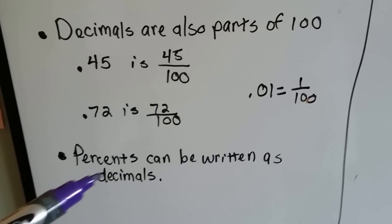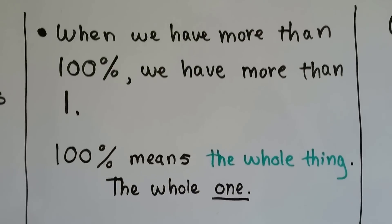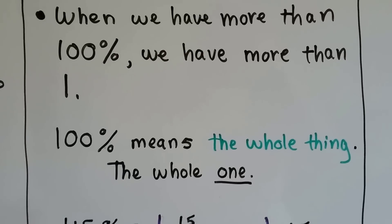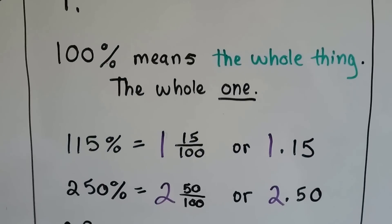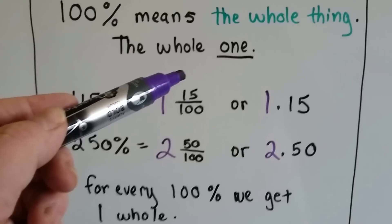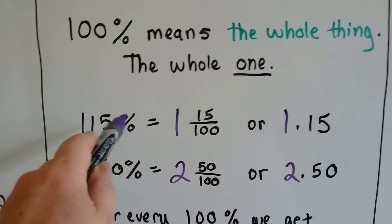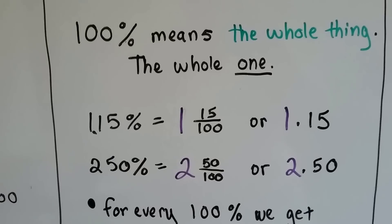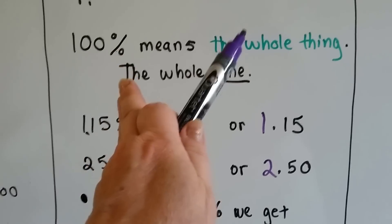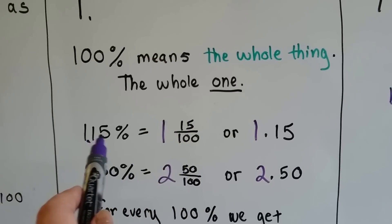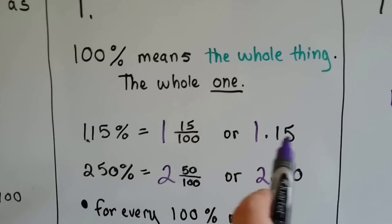Percents can be written as decimals also. When we have more than one hundred percent, we have more than one. If I ate one hundred percent of the pizza, I ate the whole pizza. One hundred percent means the whole thing — the whole one. One hundred and fifteen percent means one and fifteen hundredths. You can take away the percentage sign and put a decimal point right there, but you have to take the percentage sign away. It's one point one five.